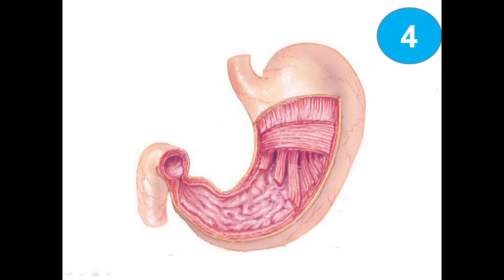Here we can see the frontal view of the stomach. This part is called the cardiac part. This dome-shaped upper portion is the fundus. The rest is called the body of the stomach. This part is the pyloric part, which includes the pyloric antrum and the pyloric canal.